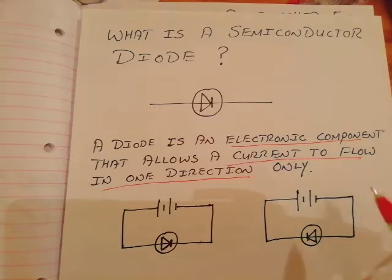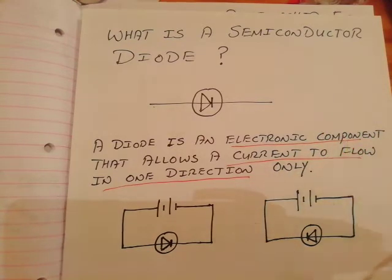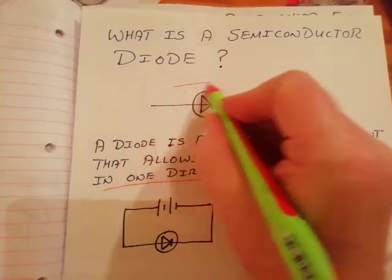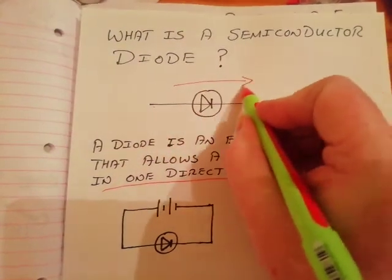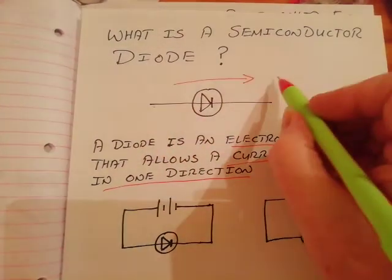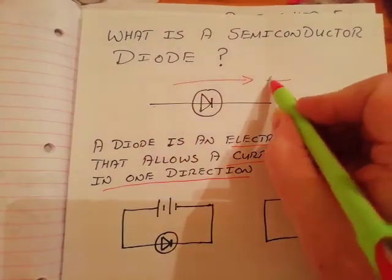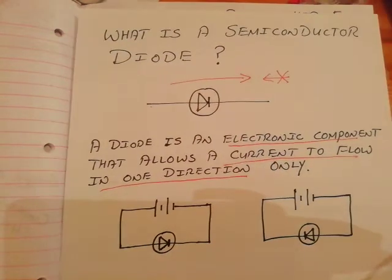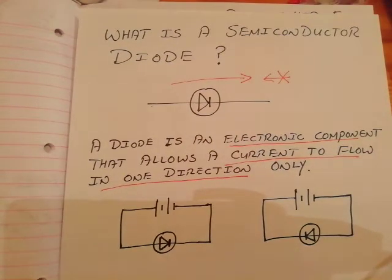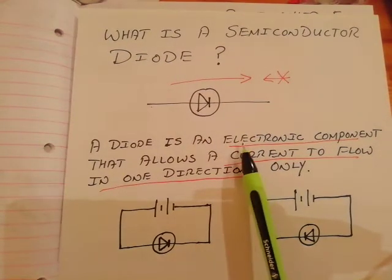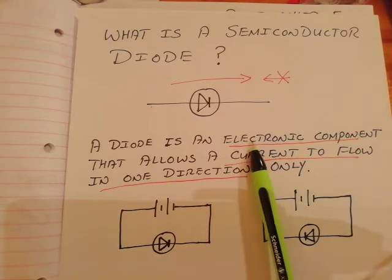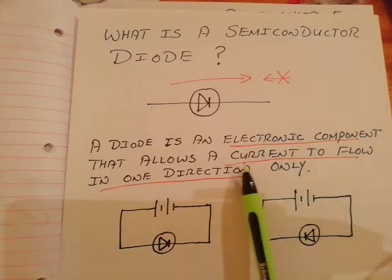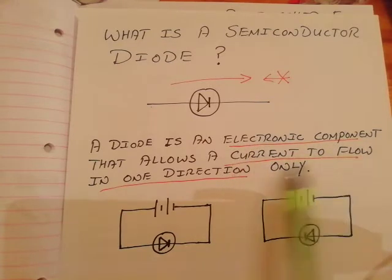A diode is like a one-way street for electric current — it allows electric current to go one way through it only. If electric current tries to come the other way, the diode will block it. Don't ever say it's a one-way street; this is the definition: it's an electronic component that allows the current to flow in one direction only.